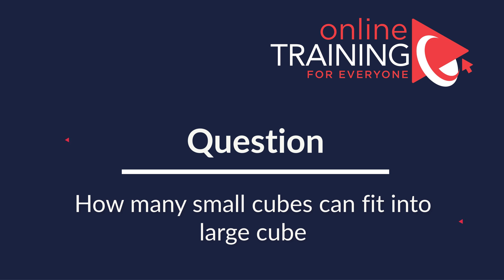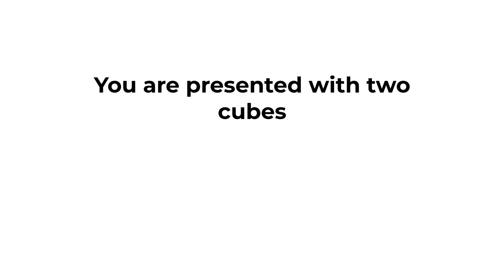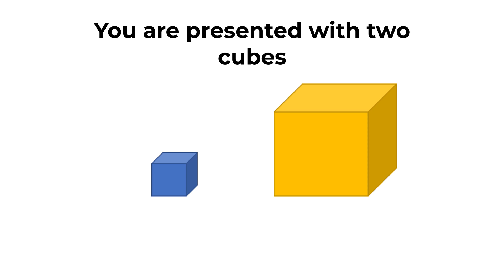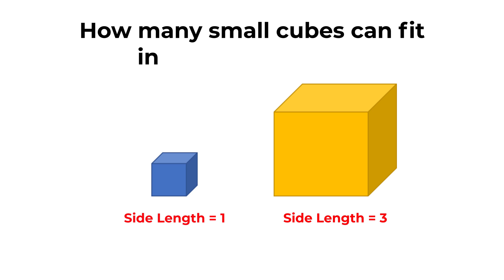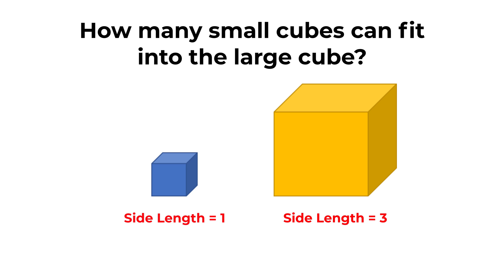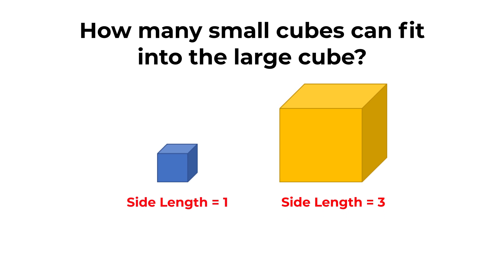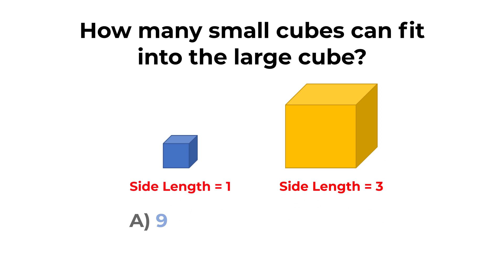Here's a cool question which you frequently see on the test. You're presented with two cubes: one cube has side length equal to one unit, and the second cube is a larger cube with side length equal to three units. The question is: how many small cubes can fit into the large cube? You have four choices: A) 9, B) 18, C) 27, and D) 81.